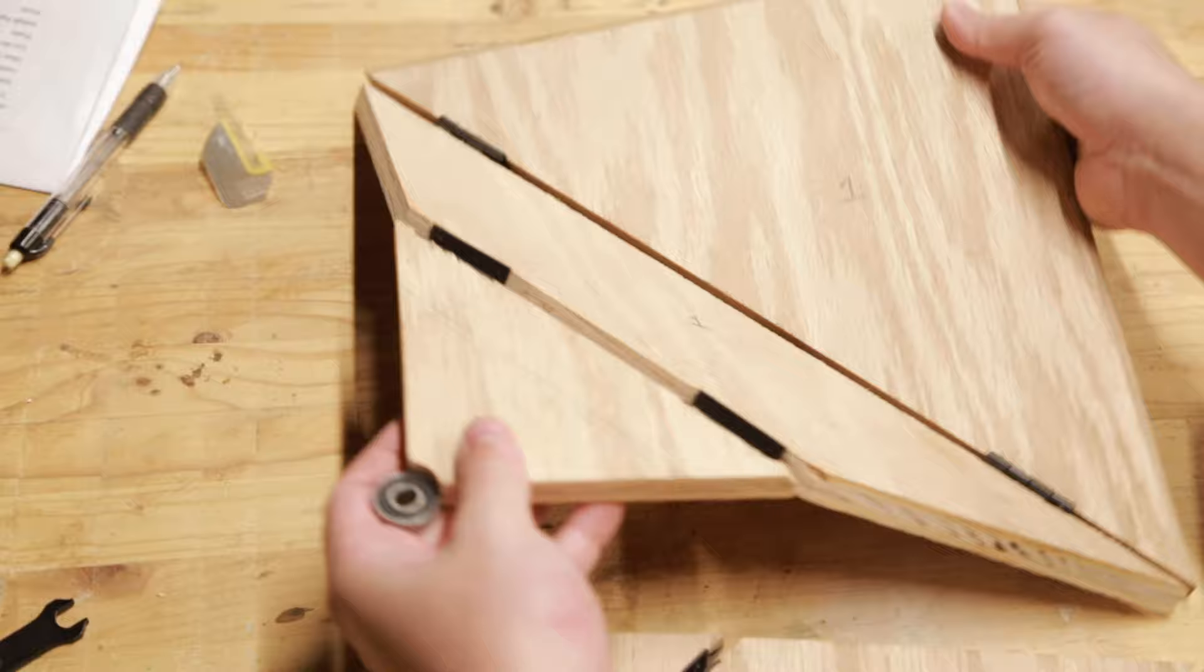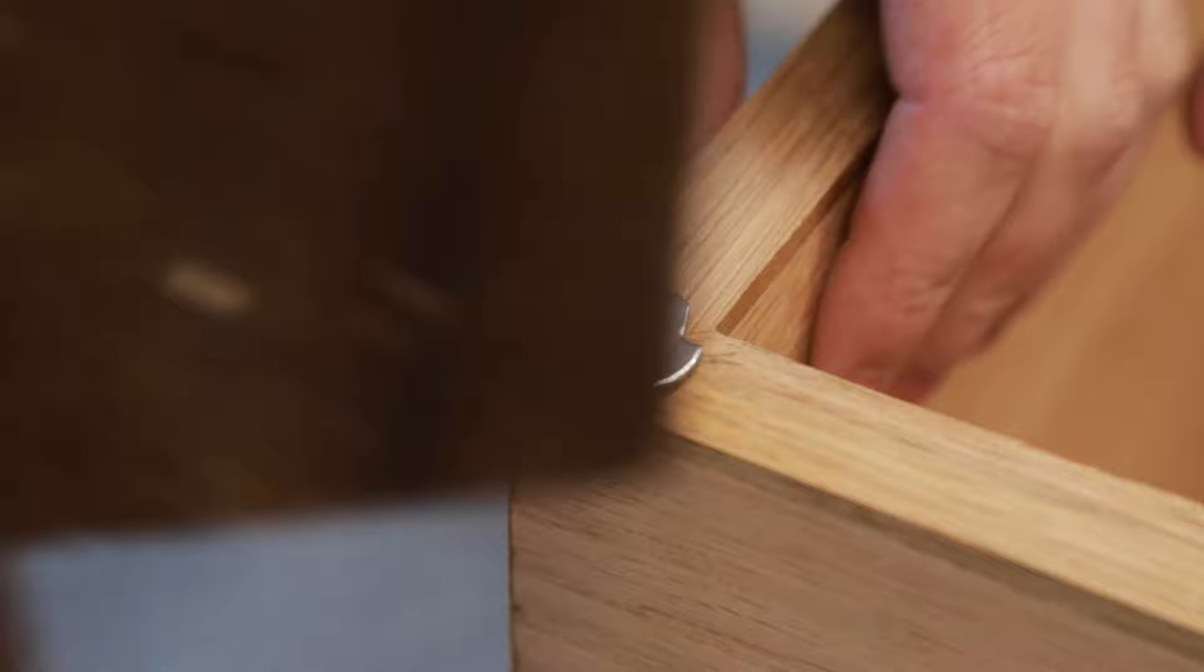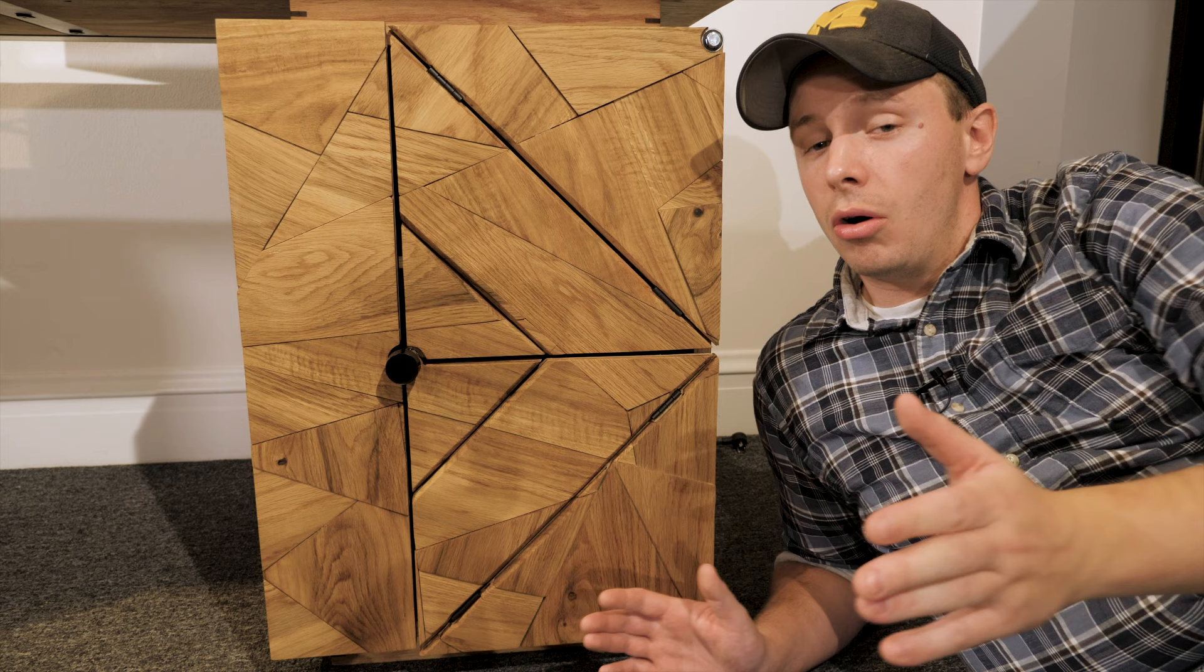I used T-nuts in the corner so that I can send a bolt through the bearings and secure it to the frame. I made sure to add some CA glue to the nut so that they don't come loose over time. In the full project video, I added this mosaic pattern to the door. You don't actually have to do that. You could probably stop right there and just keep the door the way it is and it'll work just fine.